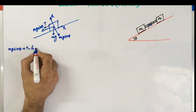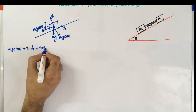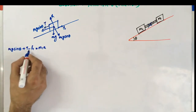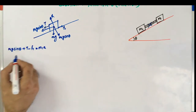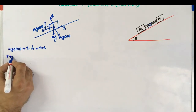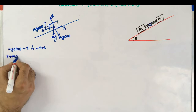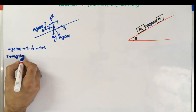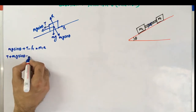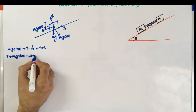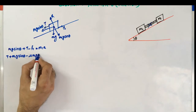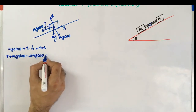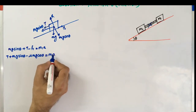We write the equation of motion as M1G sin(theta) plus T minus F1 equals M1A. Putting the value of F1, this becomes: T plus M1G sin(theta) minus mu·M1G cos(theta) equals M1A. This is equation 1.